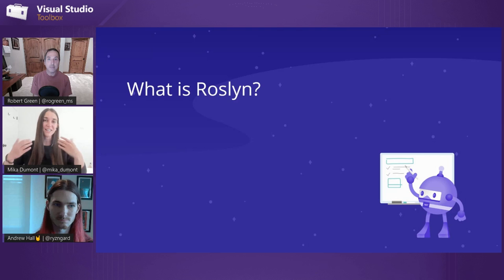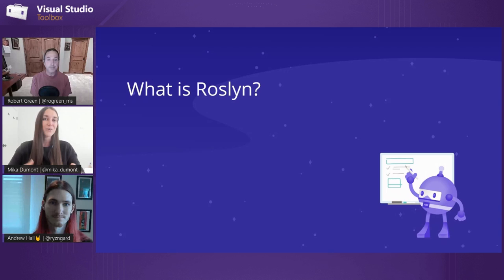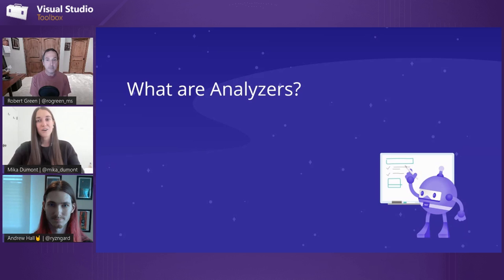Mika, you want to go first? So I'm going to share my screen. First, I'd just like to give an intro of Roslyn. Roslyn is the codename for the C# and the Visual Basic compiler where we built an open source API surface so that any developer can write really smart code-focused tools and technologies. And some of these tools and technologies are also known as analyzers.